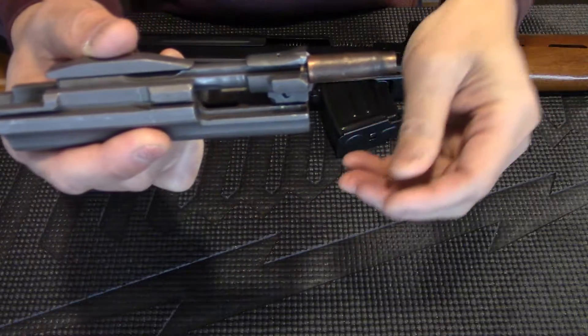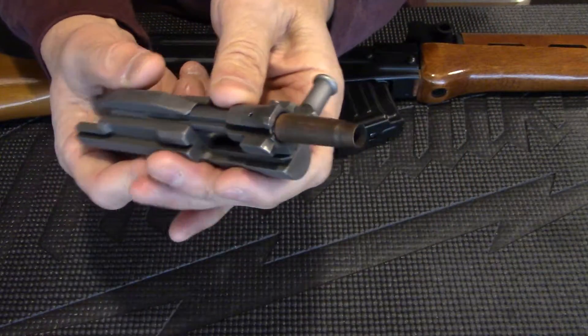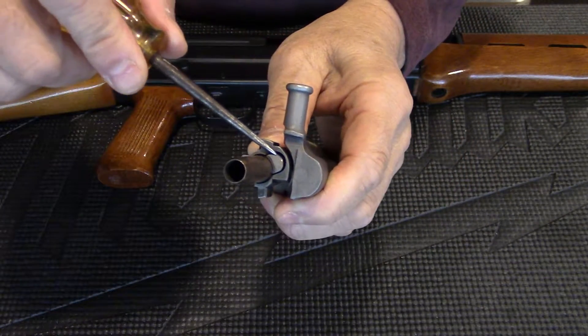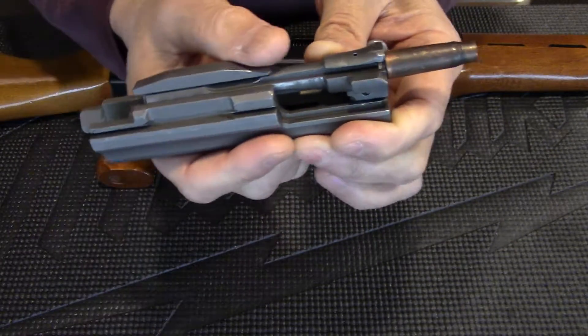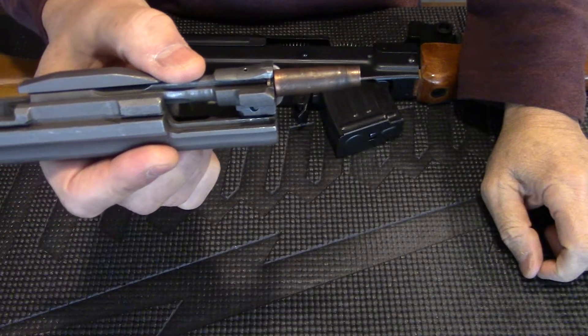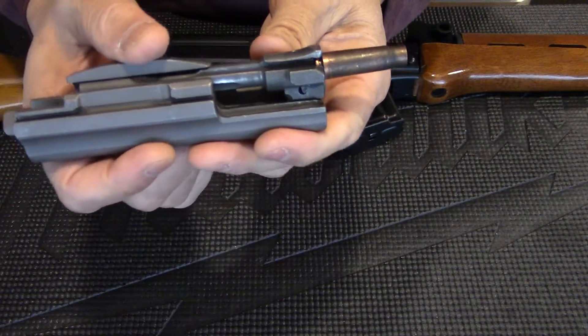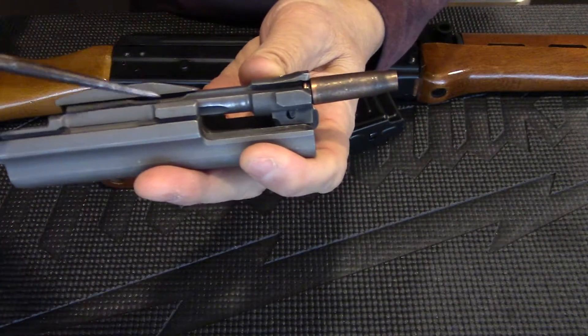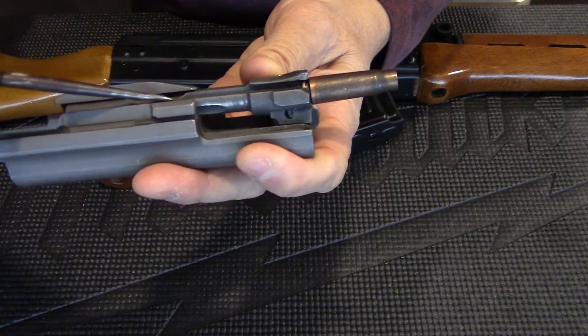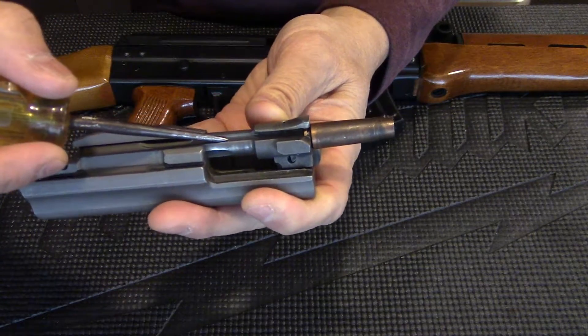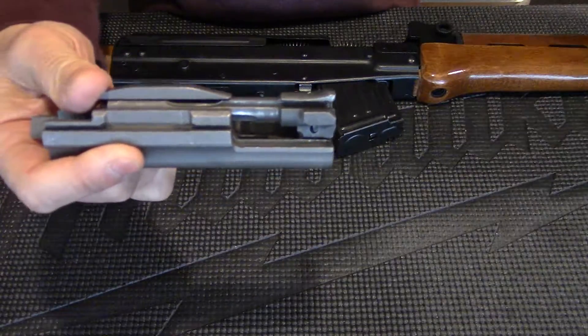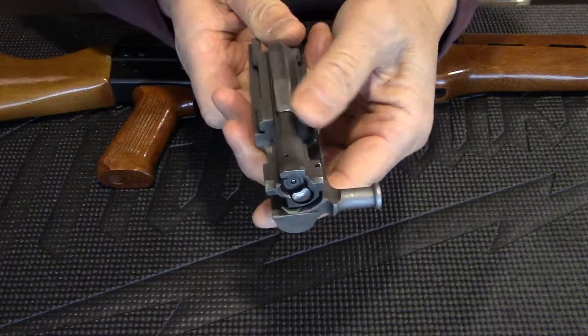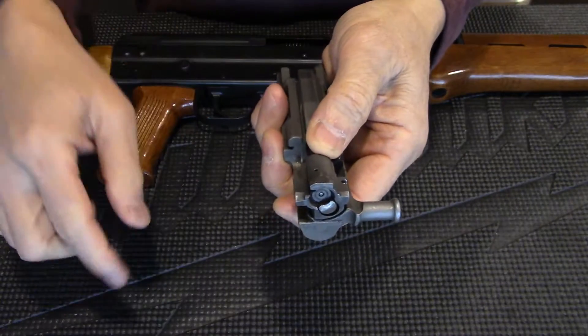As it goes farther back, the extractor is pulling the spent cartridge out. As it continues to move back, there's an ejector that runs along this path and it ejects the spent casing. That is the entire firing cycle.